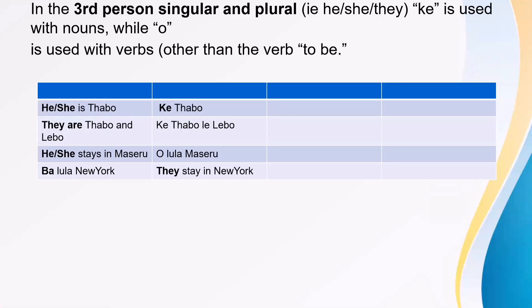So in the third person, singular and plural, when we refer to he, she, and in plural, they — "e" is used with nouns, while "u" is used with verbs, other than the verb "to be." But if this sounds really confusing, in the next lessons I will go into detail and explain really in depth about what I'm saying here.